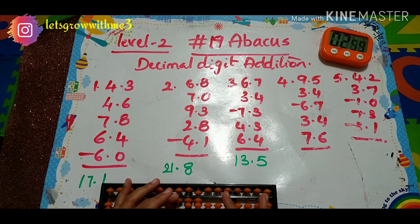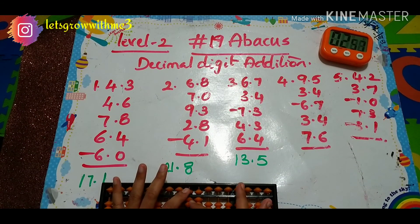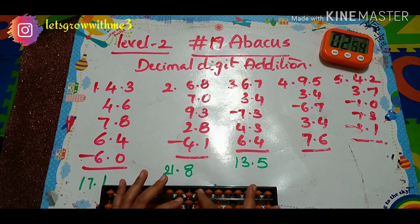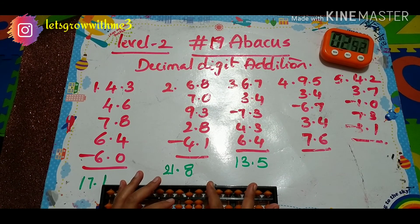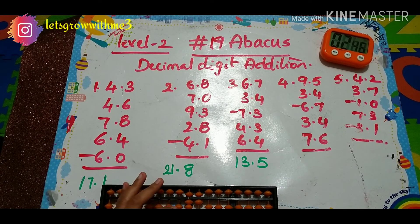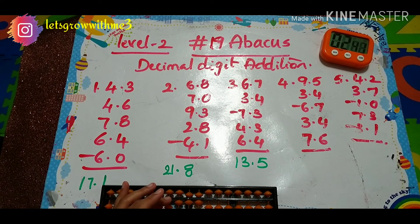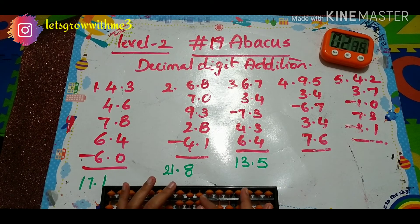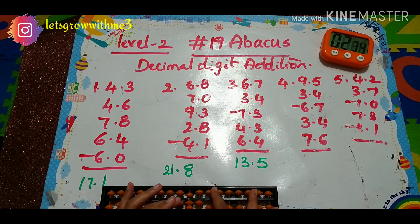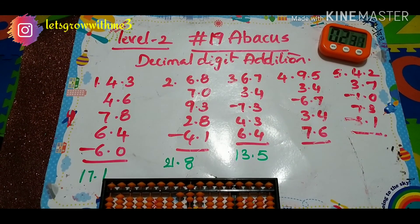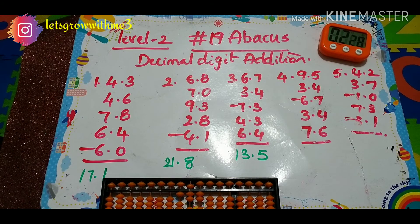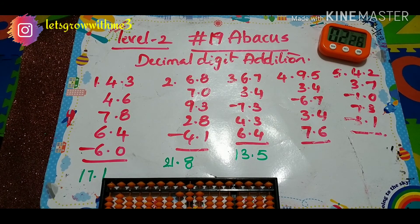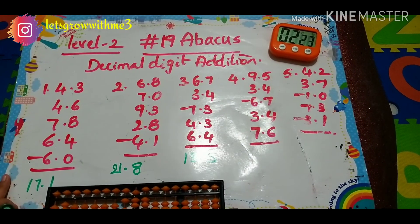Next minus 6 — papa down, mama down, baby's down, so minus 7. Minus 10 down, mama down, baby's down. Next plus 3.4 — plus 10 minus 7. Then plus 7.6. The answer is 17.2.